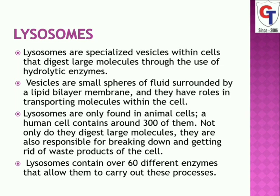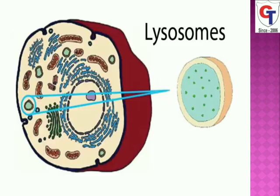Lysosomes are single membrane-bounded bodies. They are round, elliptical, or highly irregular in shape.